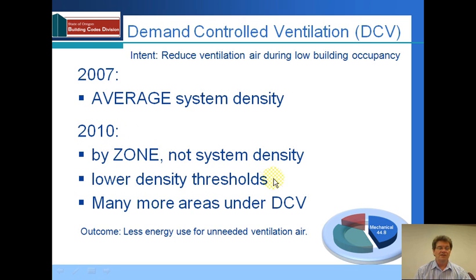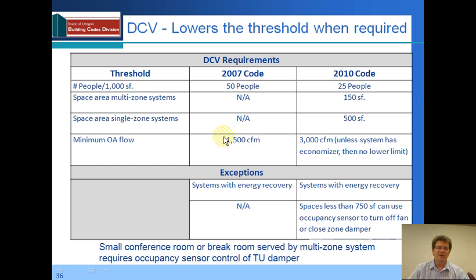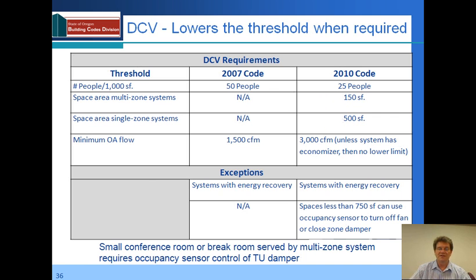As a result, there are lower density thresholds, and many more areas are going to have demand-controlled ventilation controls required. The threshold in people per 1,000 square feet under the old code was 50 people; now it's down to 25 people. So we're going to have areas that were across the borderline before now falling into a requirement. Because it's by zone, we do have some minimums: 150 square feet on a multi-zone system and 500 square feet on a single-zone system. Pretty much any unit that has an economizer will have this requirement, and if there's no economizer, it will have a requirement to have this type of control installed at 3,000 CFM of outside airflow.